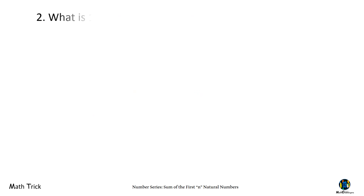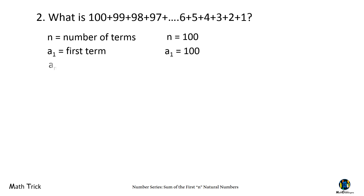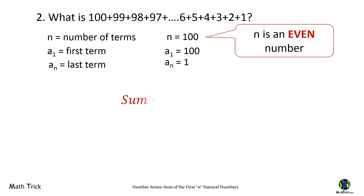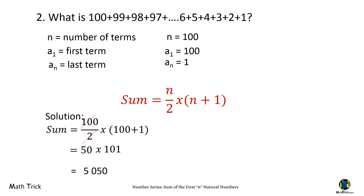What is 100 plus 99 plus 98 plus 97, and so on, down to 3 plus 2 plus 1? The number of terms is 100, with first term 100 and last term 1. Since the number of terms is even, we use the formula: sum equals N over 2 times the quantity N plus 1. We get 100 over 2 times 101. 100 divided by 2 is 50. 100 plus 1 is 101. 50 times 101 is 5,050.